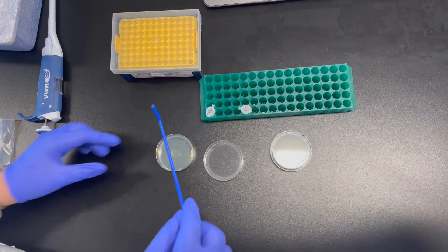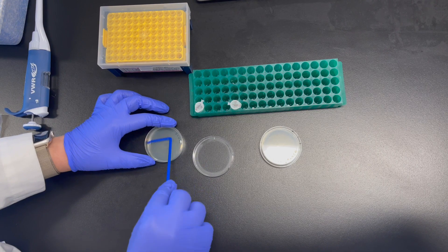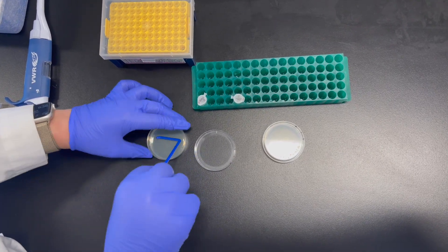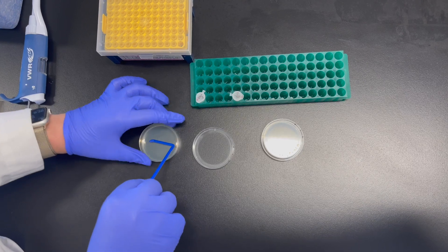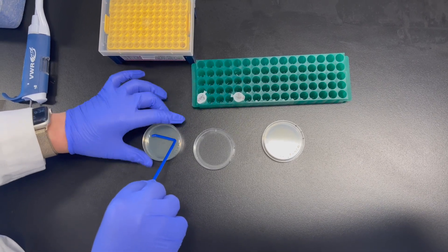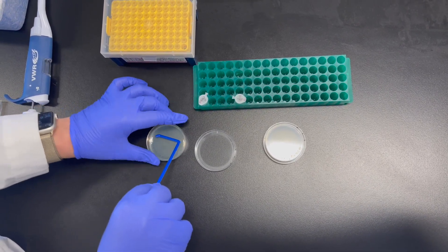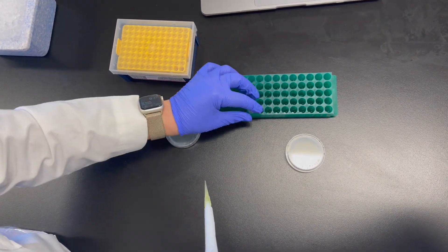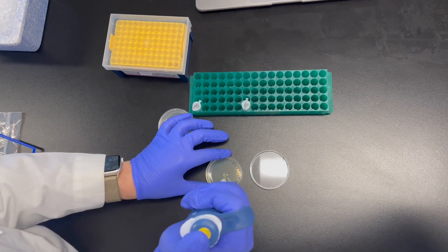Evenly spread the mixture on the plate using a sterile spreader. Make sure to add the samples from the three remaining tubes to their corresponding plates, so that you have a total of four completed plates.